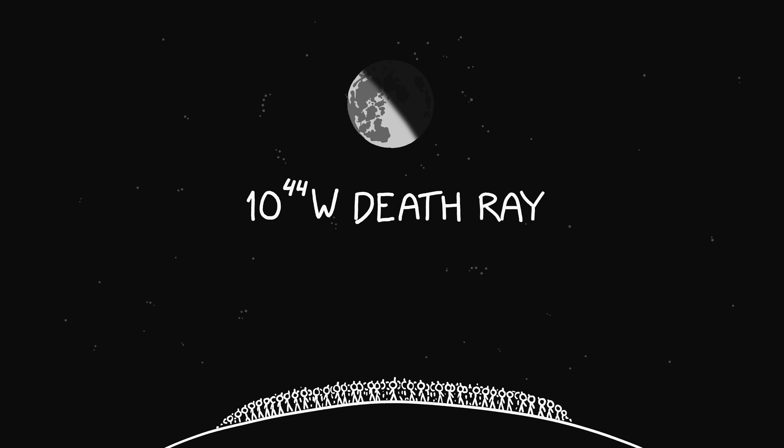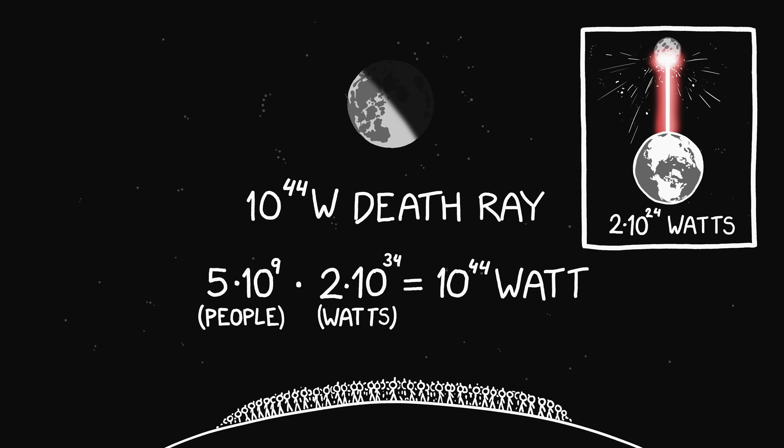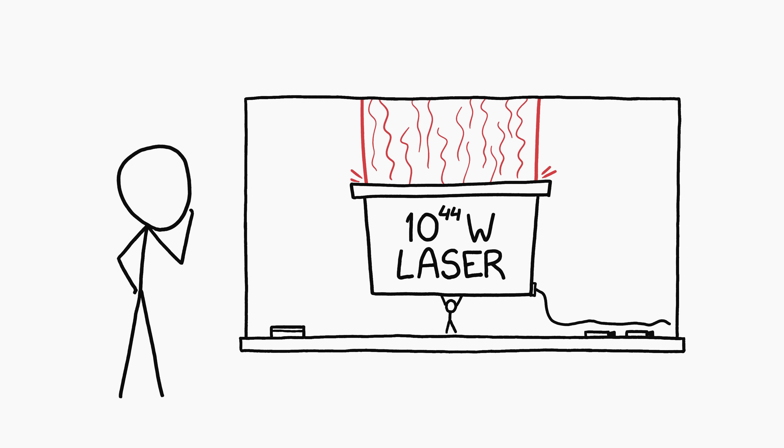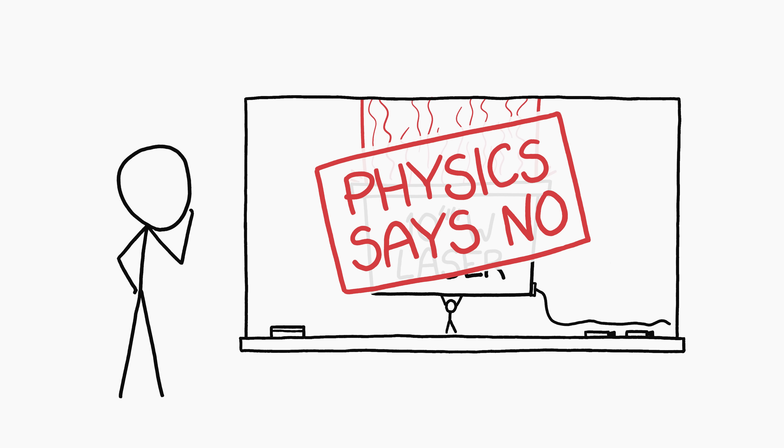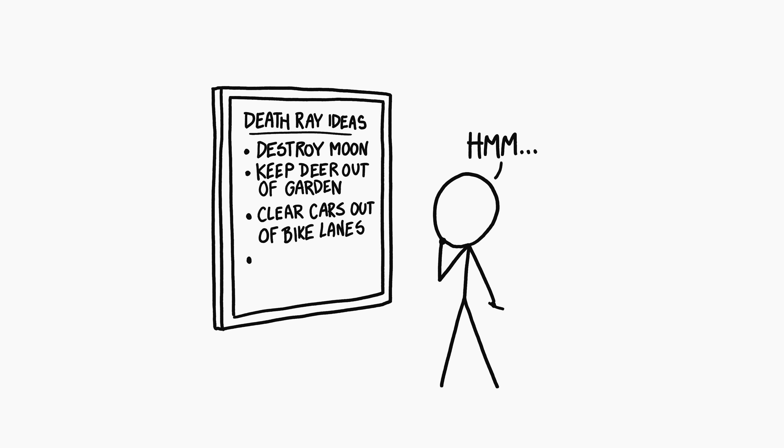To get a 10 to the 44 watt death ray of our own, we'd need to give each person on the moon-facing side of the planet a 2 times 10 to the 34 watt laser. That is, each person would need a laser 10 billion times more powerful than the final combined laser that violently ejected the moon. This is an implausible scenario, and it wouldn't work for reasons we'll get to in a minute. But first, let's think about what we could do with a beam like that.